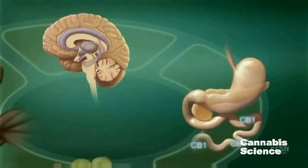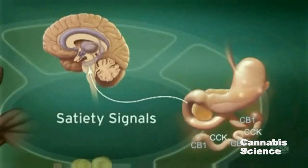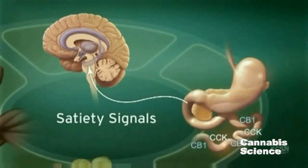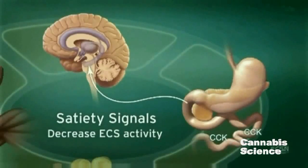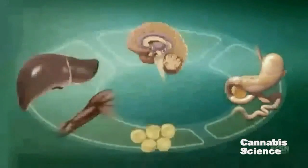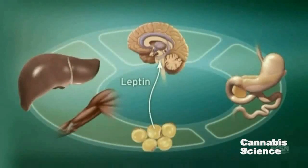After eating, cholecystokinin in the duodenum triggers satiety signals. Subsequently, ECS activity is decreased through suppression of CB1 expression. An increase in the adiposity hormone leptin decreases endocannabinoid levels in the hypothalamus and decreases food intake.